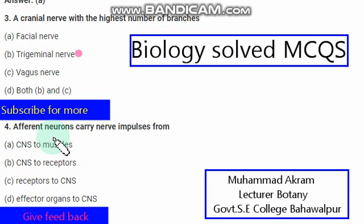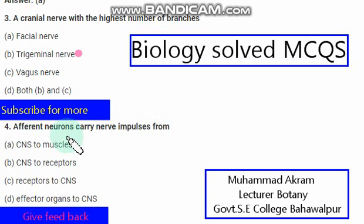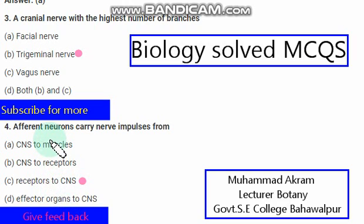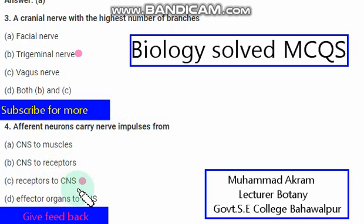Afferent neurons carry nerve impulses from — the right option is option C — receptors to the central nervous system. Afferent neurons carry nerve impulses from receptors to CNS.